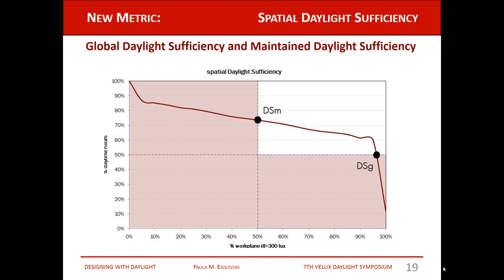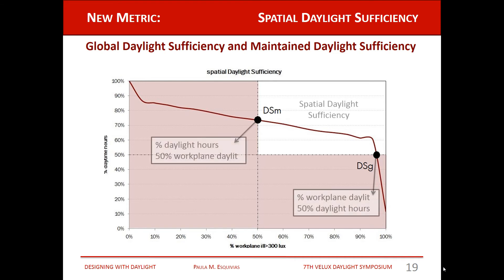If we want to know the global contribution, we take the hourly work plane analysis and for each hour ask how many sensor points meet 300 lux. From this, I define two new metrics: the temporal daylight efficiency, which represents how many daylight hours the work plane meets 30% coverage of 300 lux; and the global daylight efficiency, which represents the coverage of the work plane for 50% of the diurnal annual hours. The spatial daylight efficiency is the region between those two points.